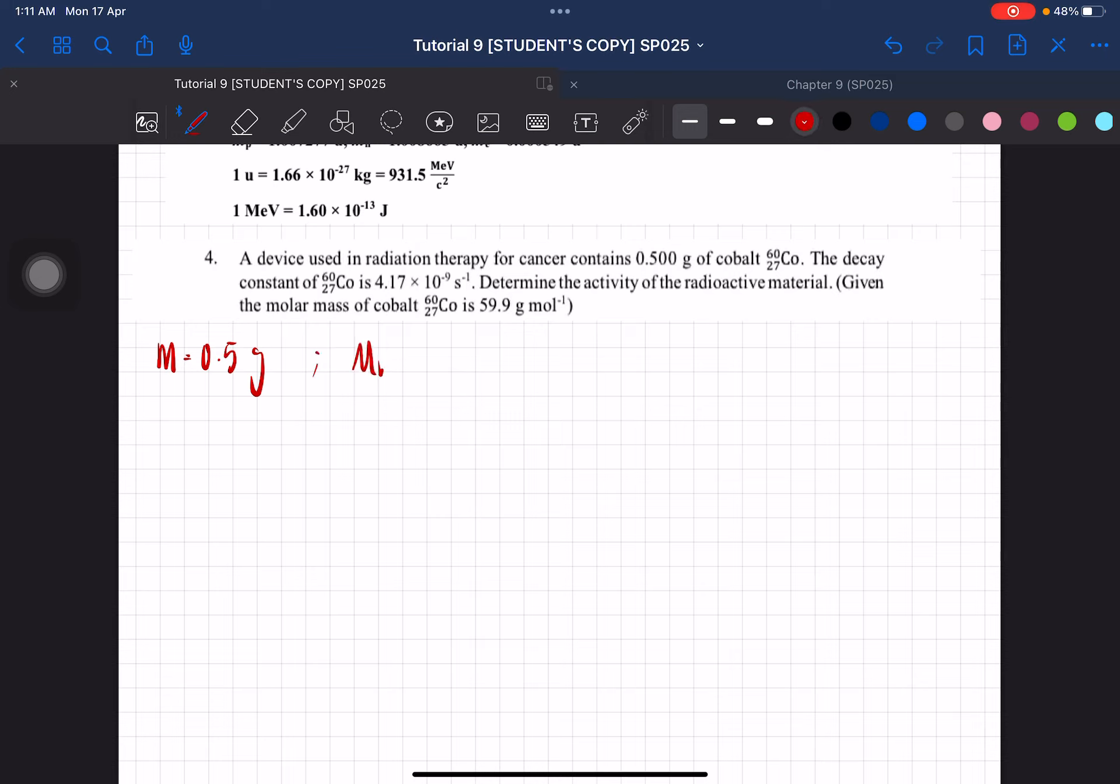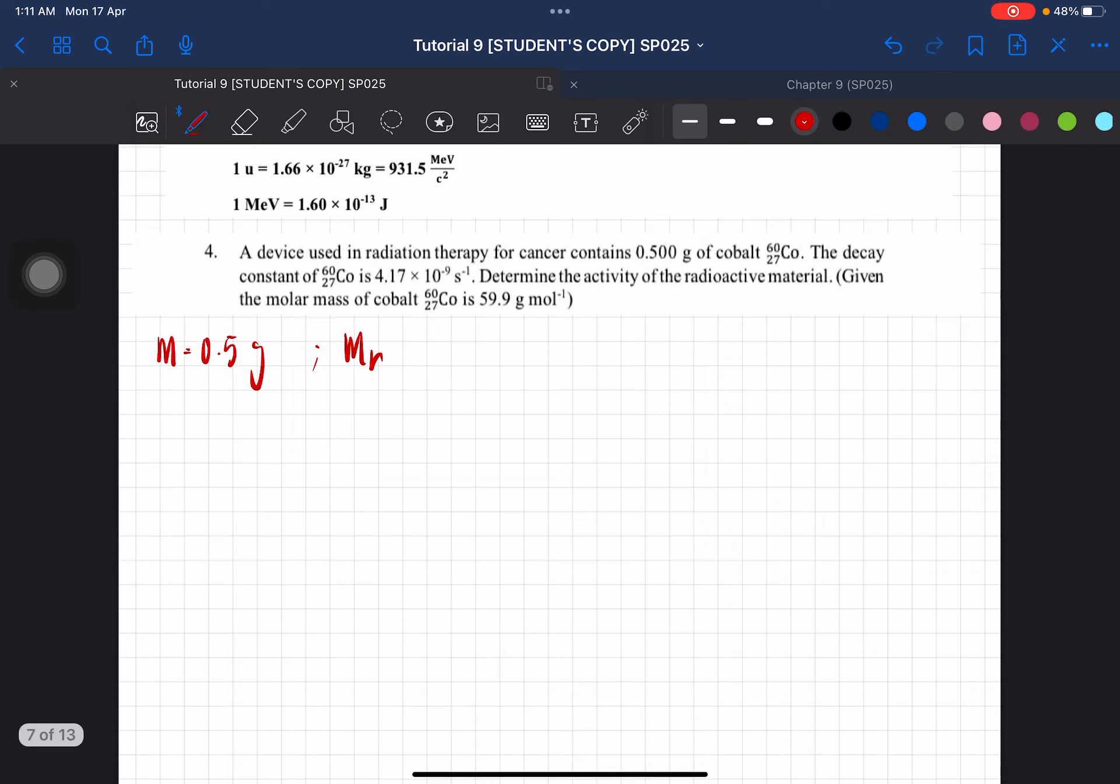So, the molar mass of cobalt is 59.9 grams per mole. And then we are asked... The decay constant is also given as 4.17 times 10 negative 9 per second.